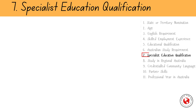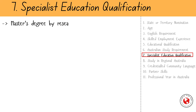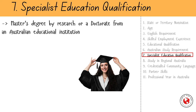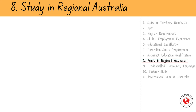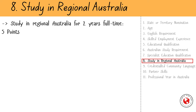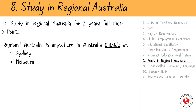The next factor is specialist education qualification. An additional 10 points will be given if you have completed a master's degree by research or a doctorate from an Australian education institution in a STEM major. STEM includes science, technology, engineering, mathematics, or ICT. The next factor is study in regional Australia. Studying in regional Australia for 2 years full-time can get you 5 additional points. Regional Australia is anywhere in Australia outside of Sydney, Melbourne, and Brisbane.